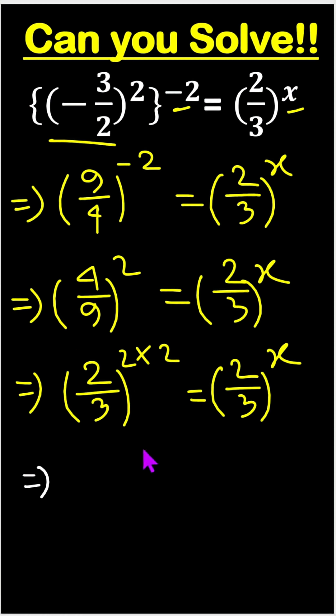Now, look the base are same which is 2 by 3, 2 by 3 therefore, 2 times 2 is 4, 4 equals to x and this is our answer. Thank you.